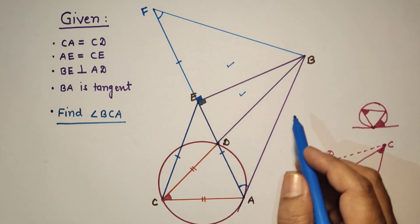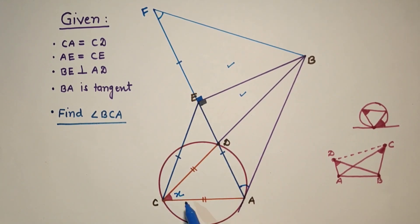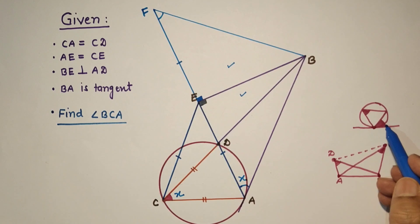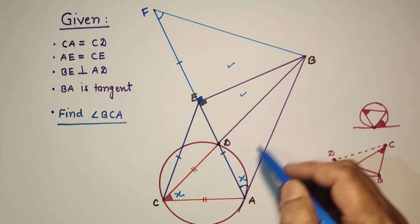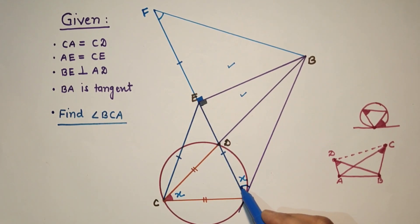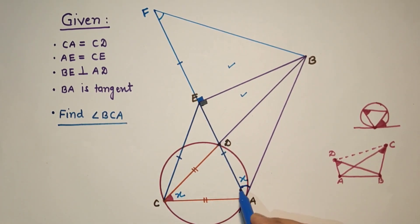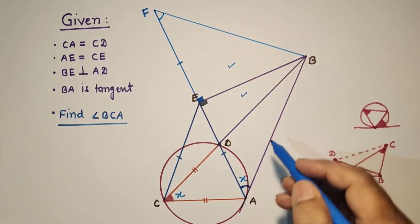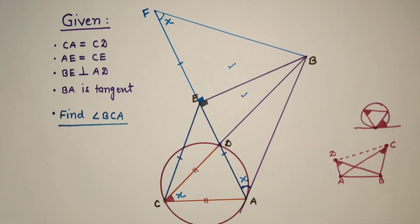Let the angle to be found, angle BCA, be X. By the tangent-chord theorem, the angle between chord DA and tangent BA is also X. This angle equals the angle subtended by chord DA in the alternate segment, so that angle is also X. Since the two triangles are congruent, the corresponding angle in the other triangle is also X.